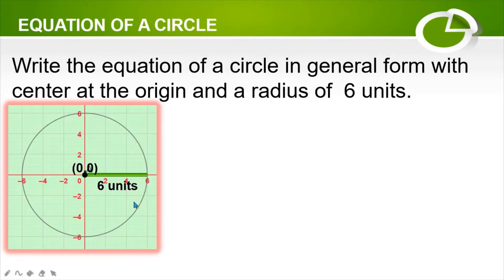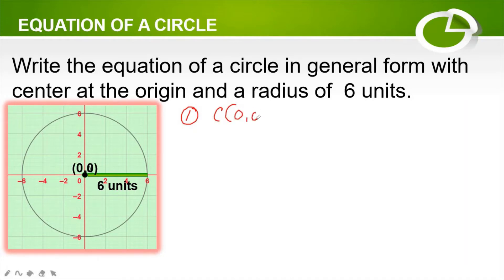Let us illustrate the given problem. The center is at (0, 0) and the radius is 6 units. First, let us identify the given: the center is at the origin, or at (0, 0), and the radius is equal to 6 units, or r is equal to 6.